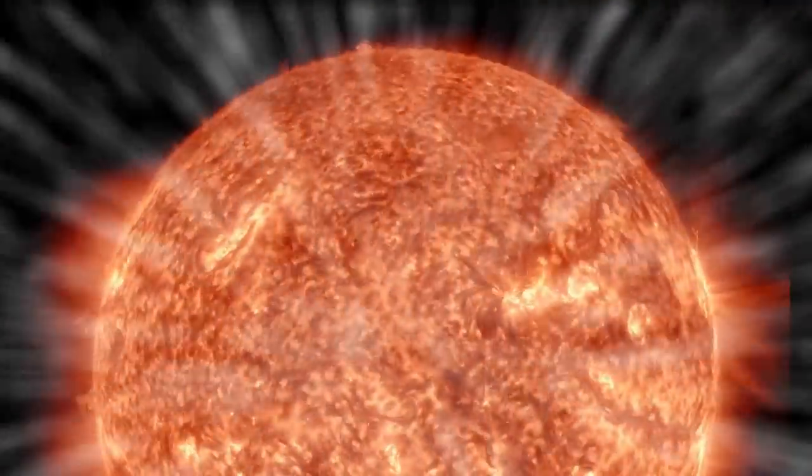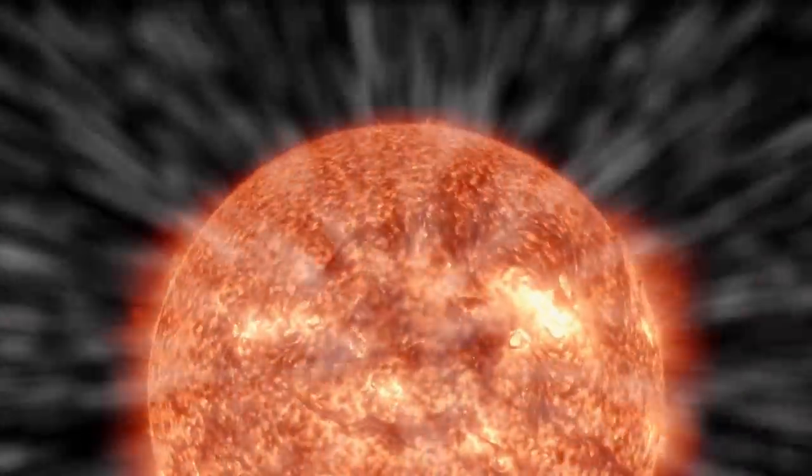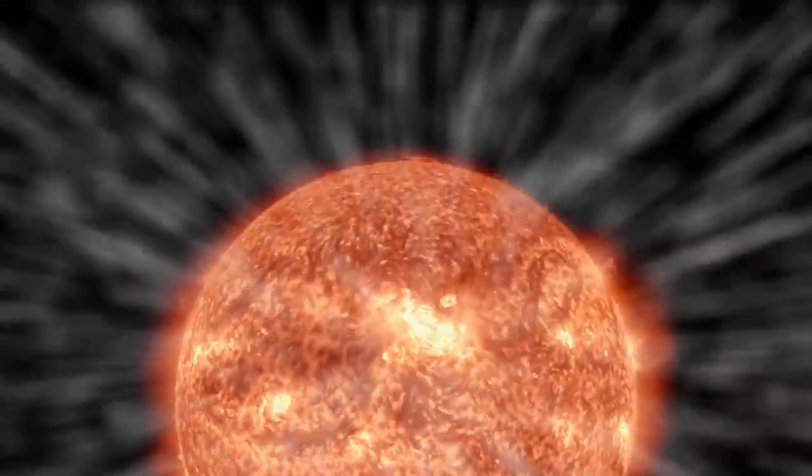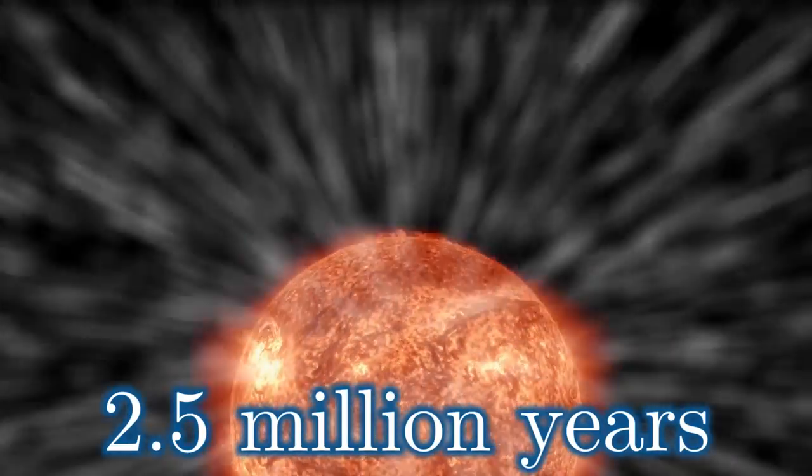But to put that number into context, that is the same number of neutrinos that the entirety of the sun gives out over the course of 2.5 million years condensed into just a meter square area in one second. But we might be able to make the neutrino bomb work a bit better though.